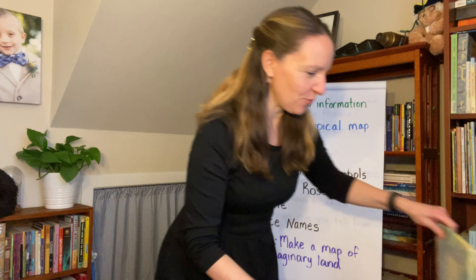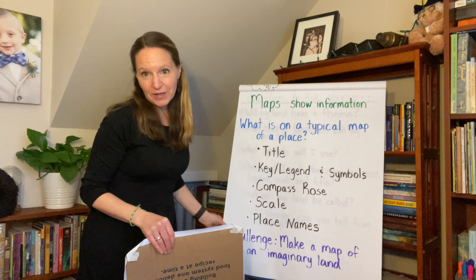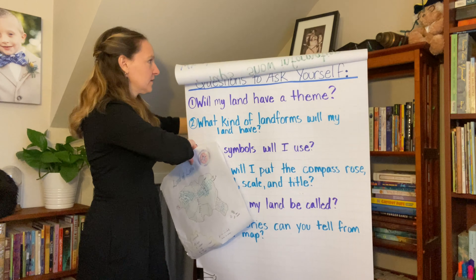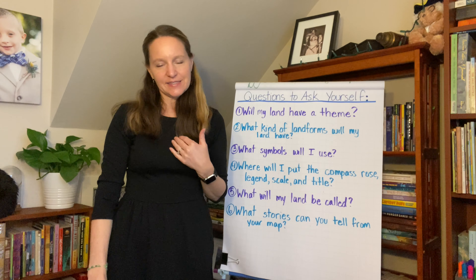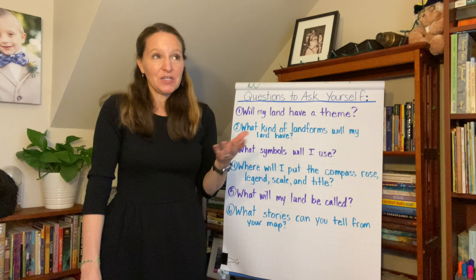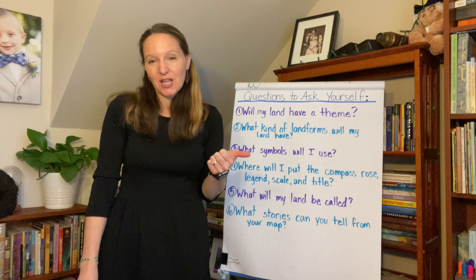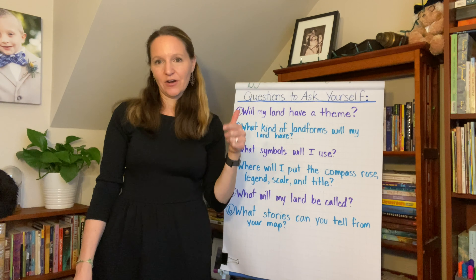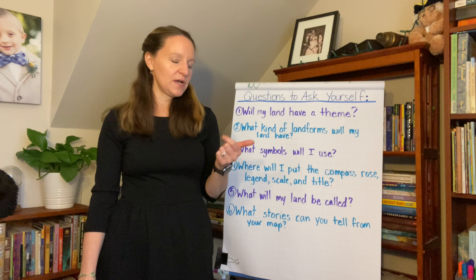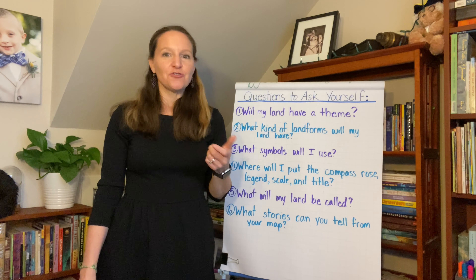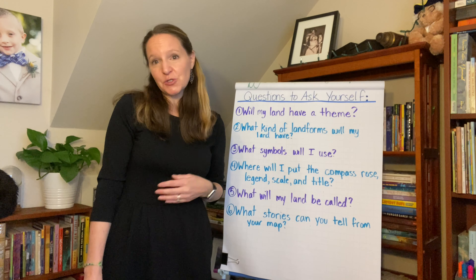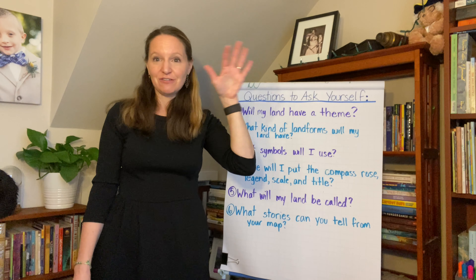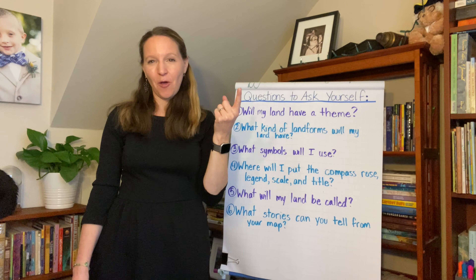Those are some examples just to get your brain thinking. Now I want to give you some questions to help guide you as you make your map. The first question you might want to ask yourself is: do I want my land to have a theme? You could think of a theme like Halloween, sports, animals, food, an ancient world, maybe Atlantis, dinosaurs, or even a video game world with all different video game characters and locations. You could also do a map that comes from a story you've read, because it'll be your imagination filling in all the details. That first question will help you make decisions for all the rest.